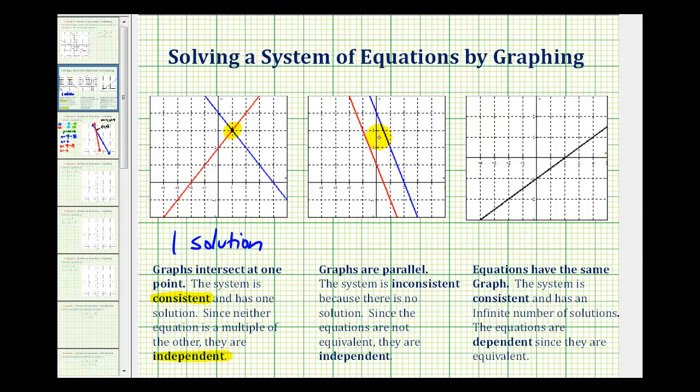If you graph two lines and the lines are parallel, then the system has no solution and the system is inconsistent and the equations are independent.